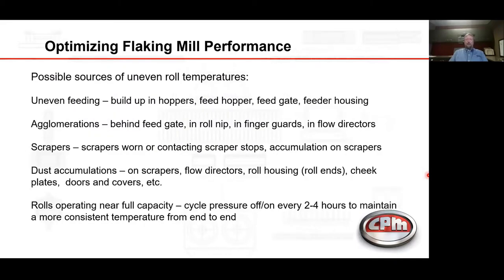Some possible sources for uneven roll temperatures are uneven feeding — due to buildup in the hoppers, by the feed gate, and in the feeder housing — and agglomerations, which are often found behind the feed gate, in the roll nip, in the finger guards, and in the flow directors.